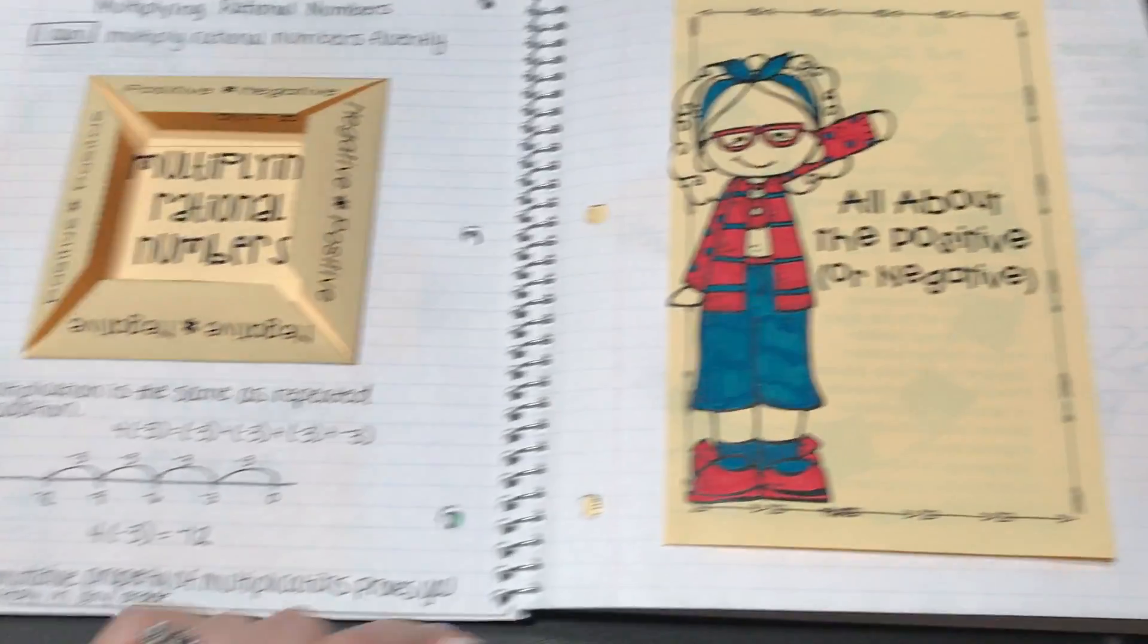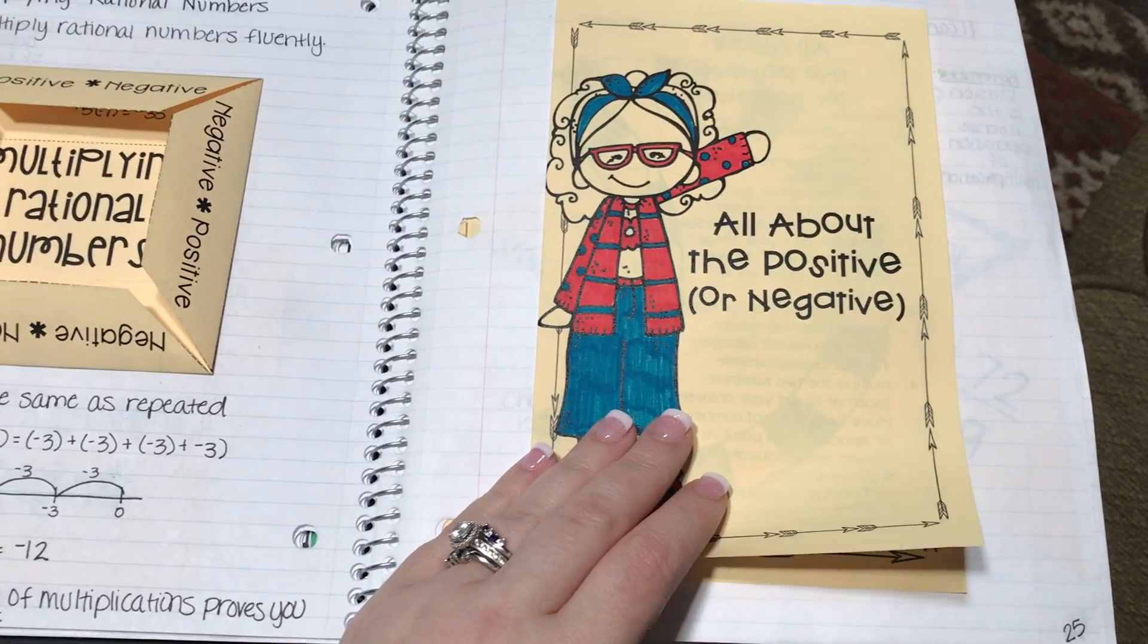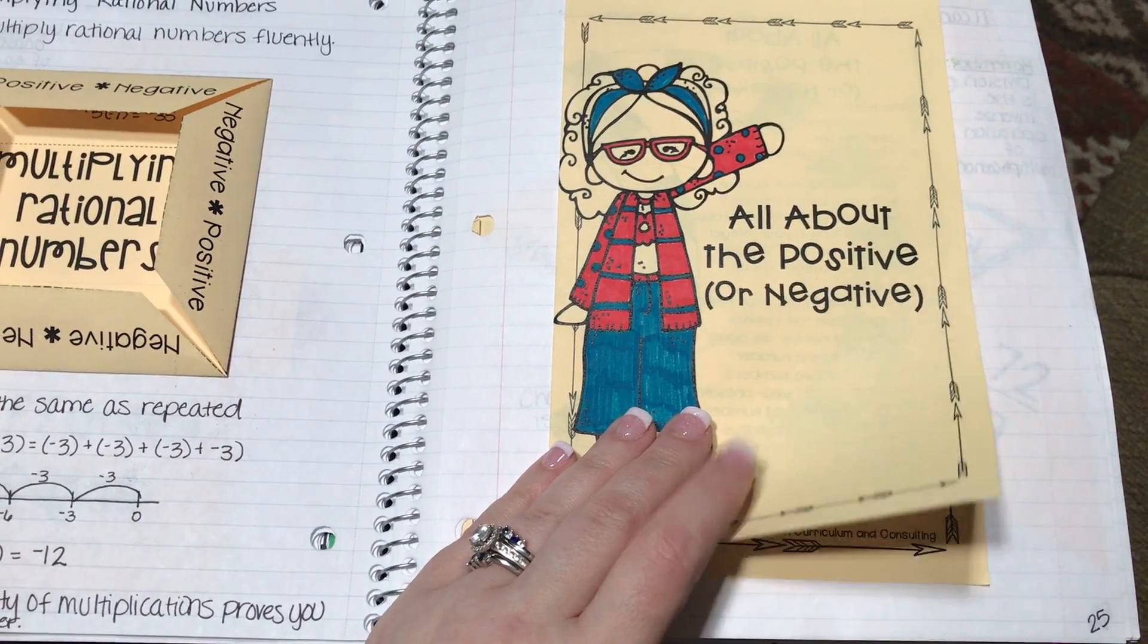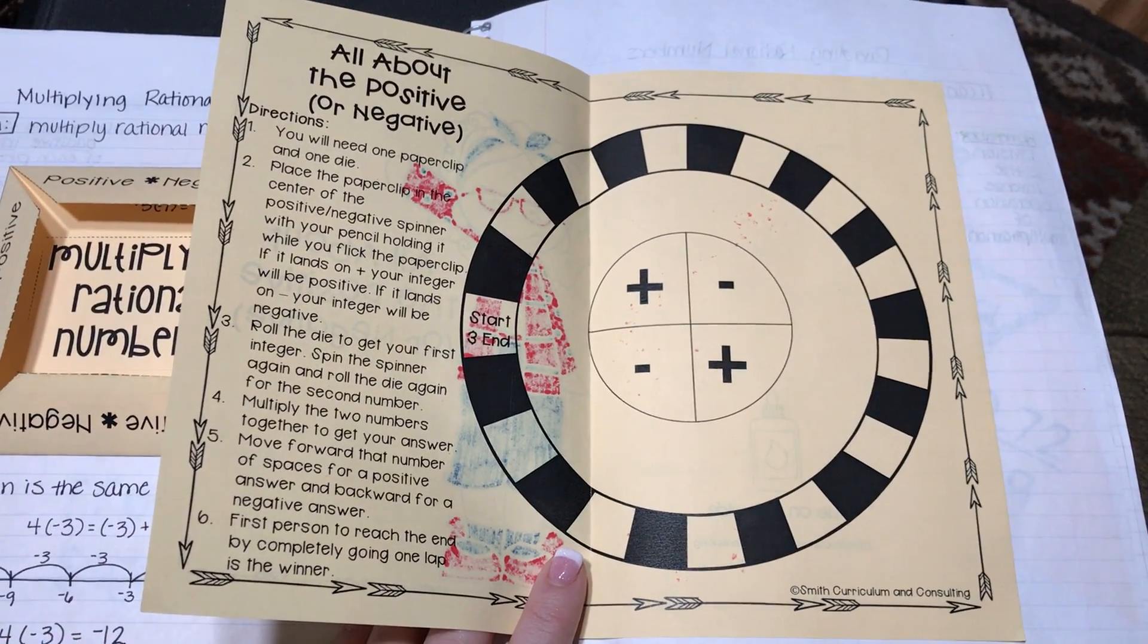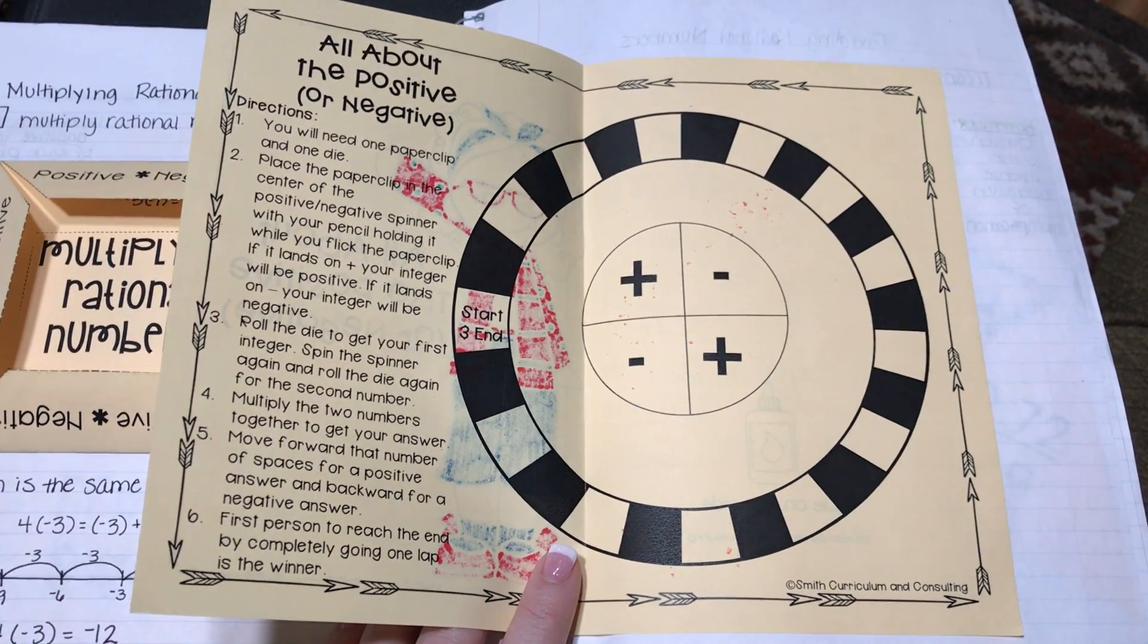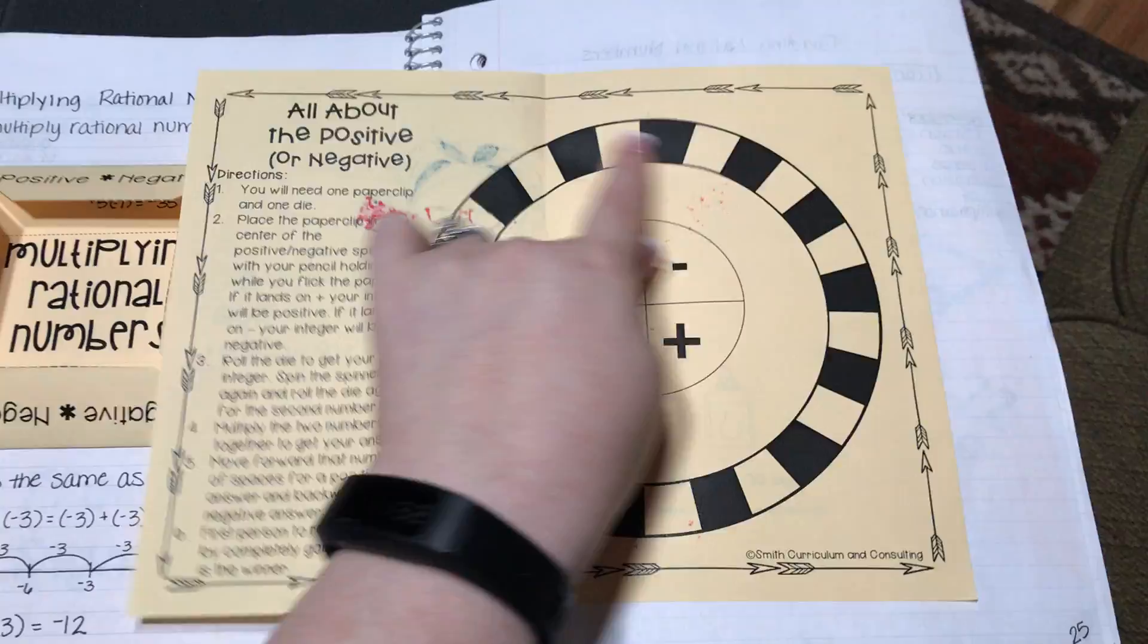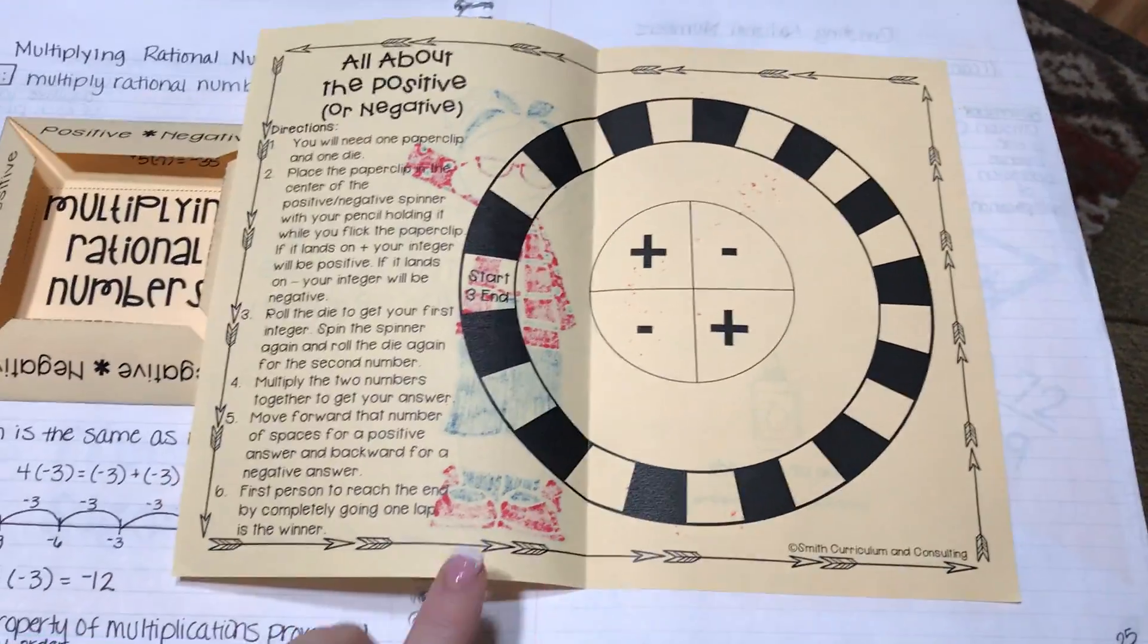The output activity for this is called All About the Positive or Negative. Students are rolling a die and they need a paper clip and they're basically just trying to make it around the circle. It's kind of fun.